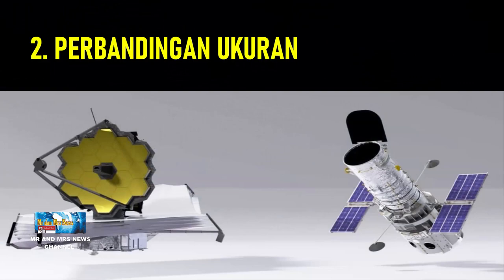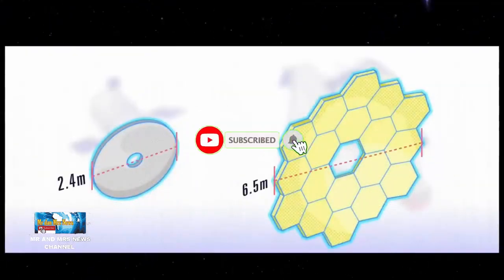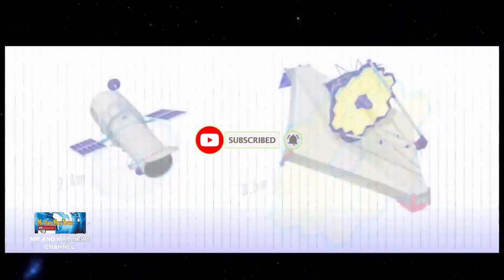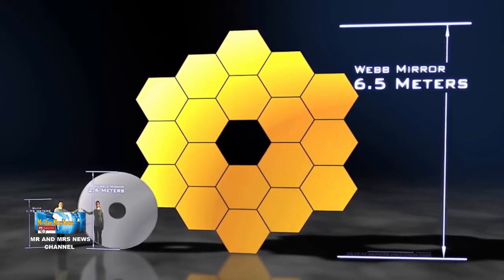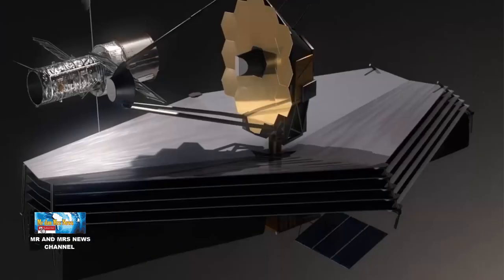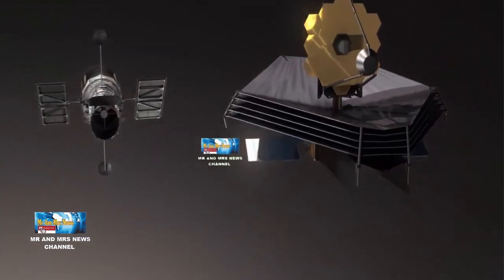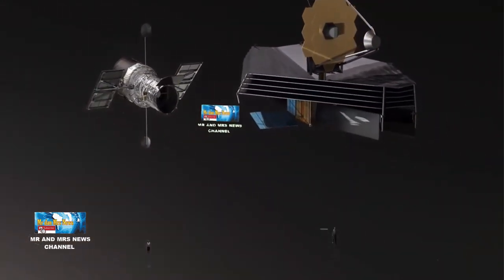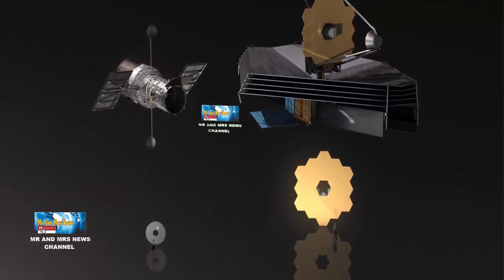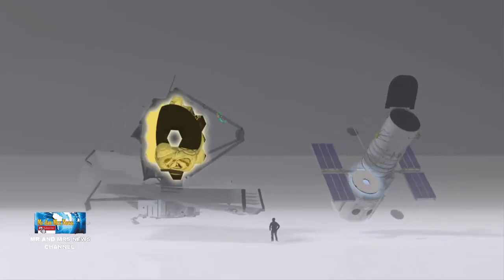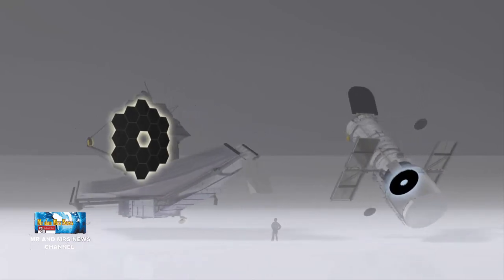Yang kedua, perbandingan ukuran. Webb memiliki cermin utama berdiameter sekitar 6,5 meter yang akan memberikan area pengumpul yang jauh lebih besar daripada cermin yang tersedia pada teleskop ruang angkasa generasi saat ini. Cermin Hubble berdiameter 2,4 meter jauh lebih kecil dan area pengumpul yang sesuai adalah 4,5 meter persegi, memberikan Webb sekitar 6,25 kali lebih banyak area pengumpul.